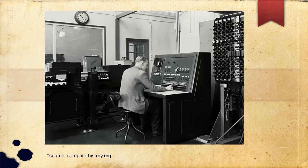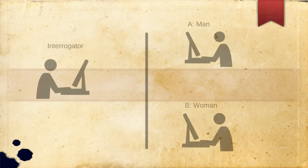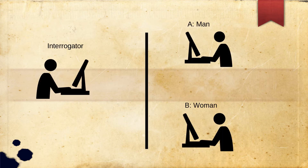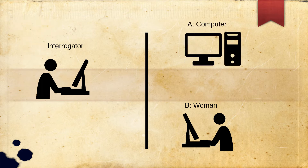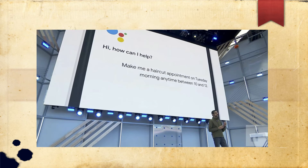Turing later transforms his question into a simple game: if you're an interrogator texting two people, person A and person B — you know one is a man and the other is a woman — can you find out which is which? If we replace one of them with a computer, is that any easier? The purpose of Turing's game is to show us that in the future it will not be easy to find out if the entity we're communicating with is a computer or a human. A few years ago, Google showcased a version of the Google Assistant that can call and book appointments on your behalf, and the people on the other end of the phone didn't realize they were talking to a computer.